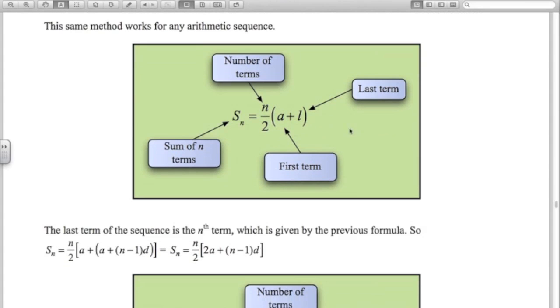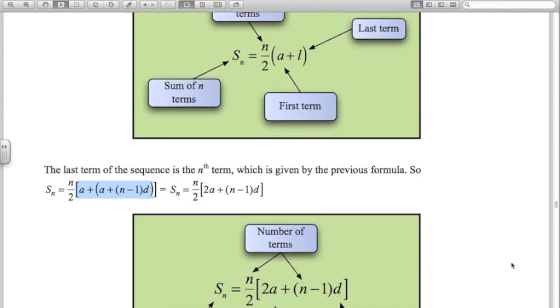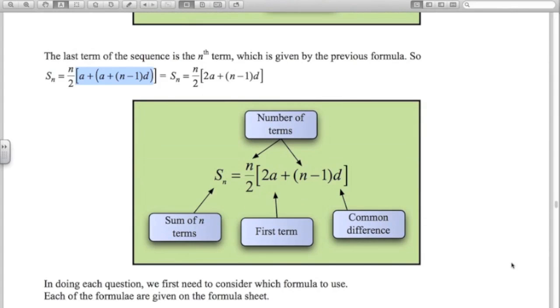If we replace l, the last term, with the formula for the nth term, which is just a plus n minus 1 times d, we get this expression. A little bit of simplifying gives us this expression. So here's another formula for the sum of n terms of an arithmetic sequence. Once again, you don't have to remember it, it's on your formula sheet.